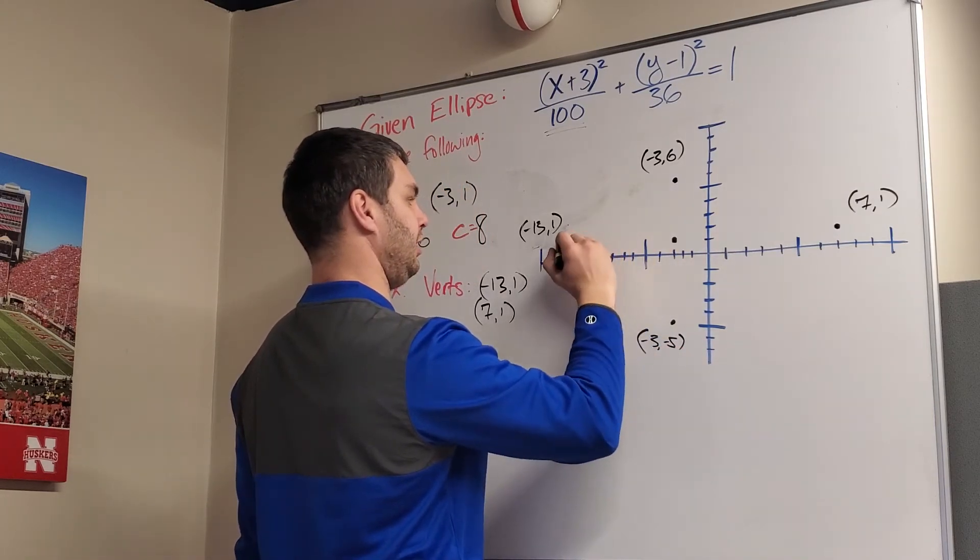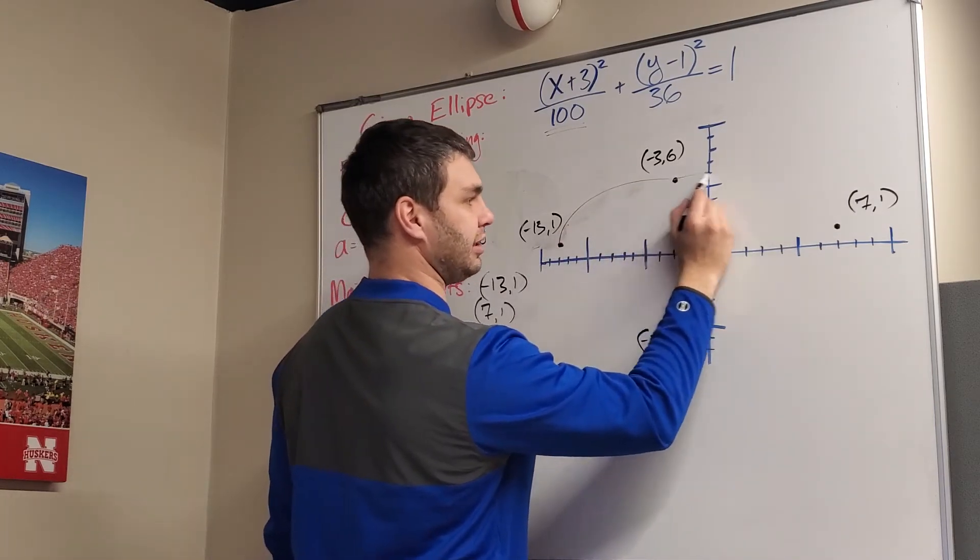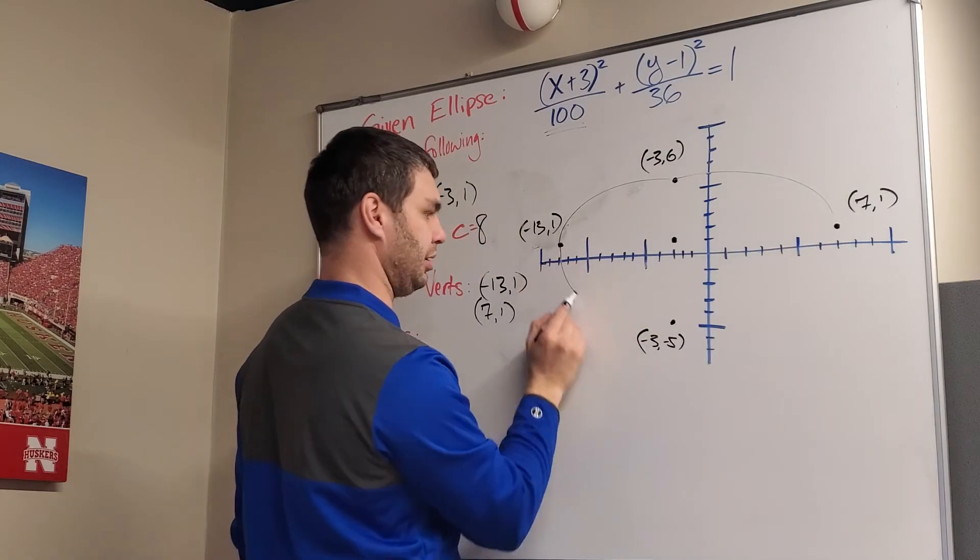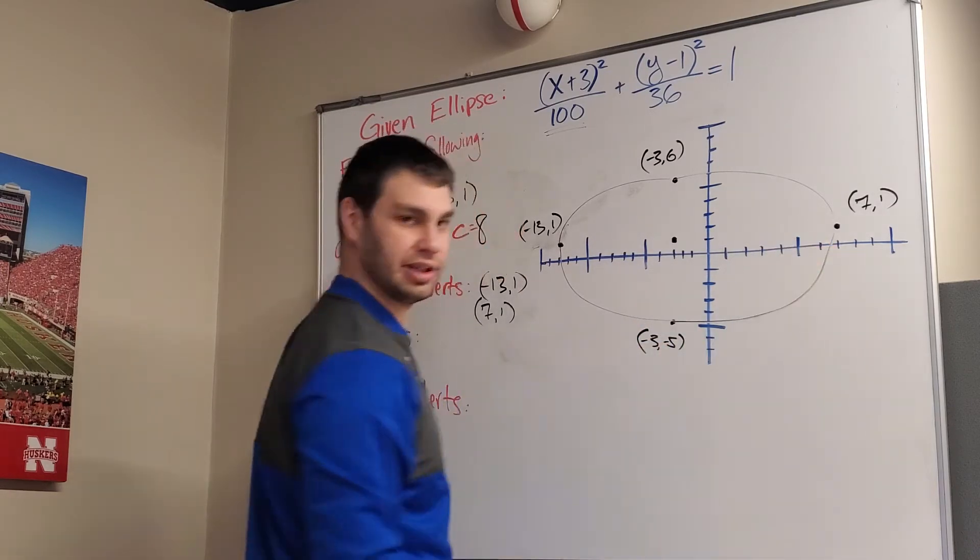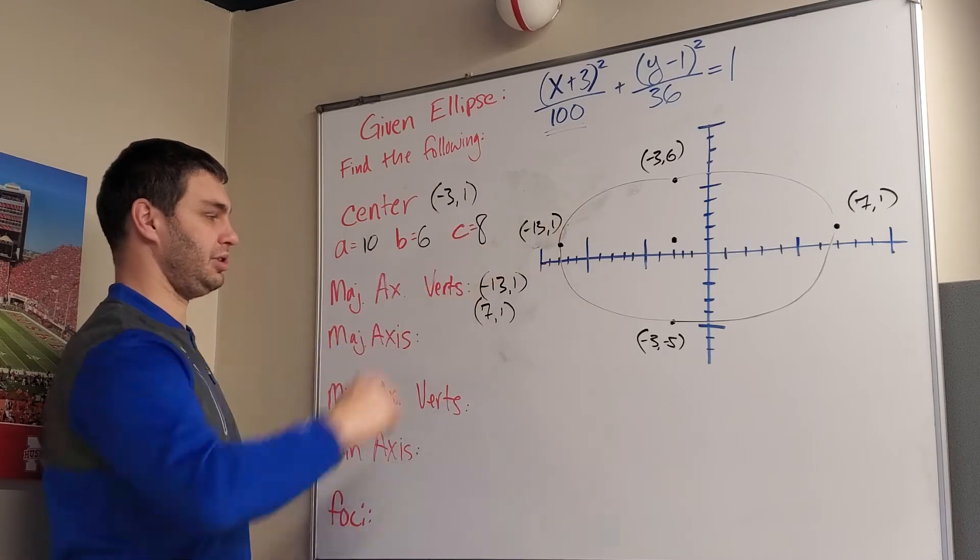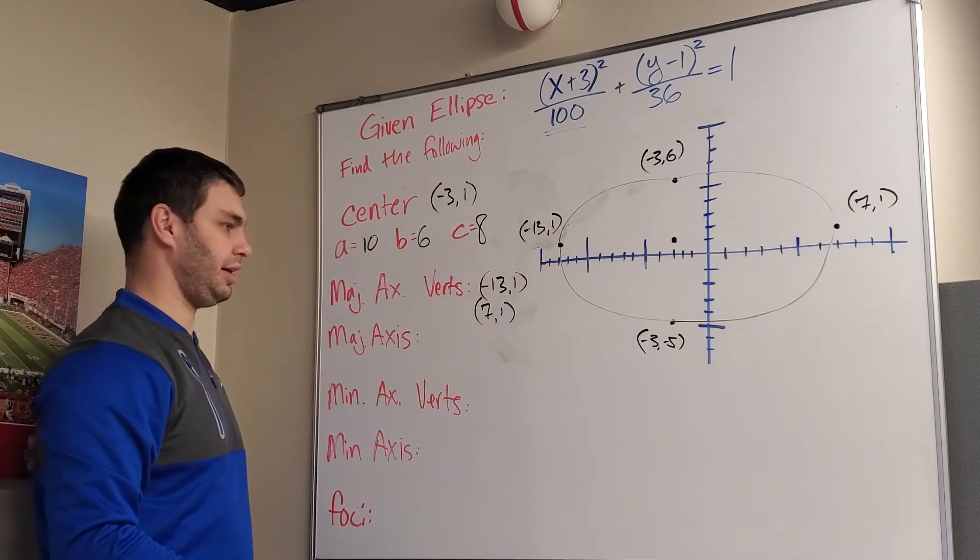So then I would have enough to make that ellipse shape that none of us are good at making. It's kind of a hard shape to draw. So it would look like that.